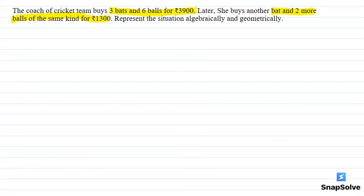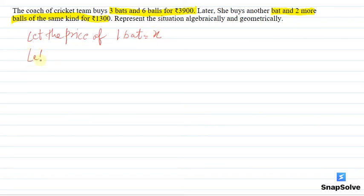Represent the situation algebraically and geometrically. So what will we do first? Let the price of 1 bat equal x, and let the price of 1 ball equal y.